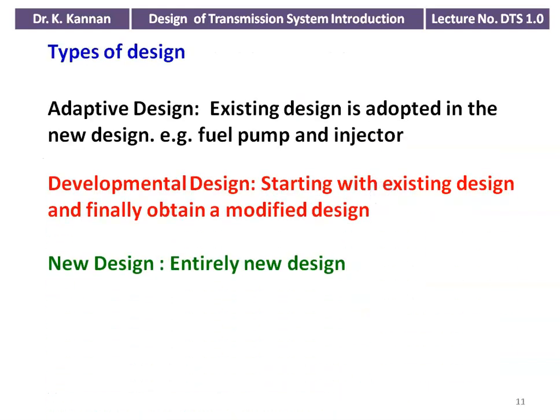There are three types of design. Adoptive Design: the existing design is adopted to the new design — for example, when designing a new diesel engine setup, the existing fuel pump and fuel injector are adopted into the new engine design. Development Design: starting with the existing design and obtaining a modified design through improvements. New Design: an entirely new design conceived from a new idea, following the design flowchart discussed earlier.